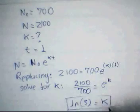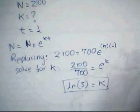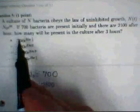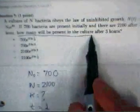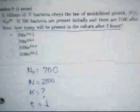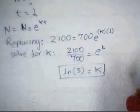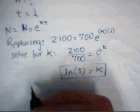So we know what k is, but this is not the final answer. Why not? Because observe the problem. Now we want to know how many will be present in the culture after 3 hours. We couldn't calculate that before because we didn't know what k was, but now we know it, so we are going to calculate.